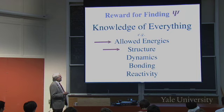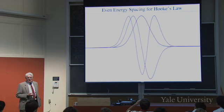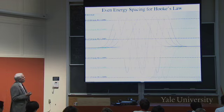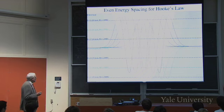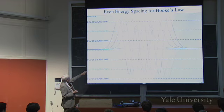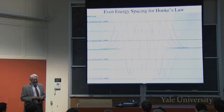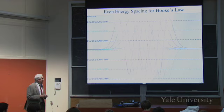First we'll look at allowed energies and structure. We already did this — zero nodes, one node, two nodes. Here's a whole bunch of them up to seven nodes. The energies are: 4.15, 12.44, 20.74, 29.04, 37.34 kilocalories per mole. They're evenly spaced after the first one. The first one above zero is half as big as the spacing of the others.